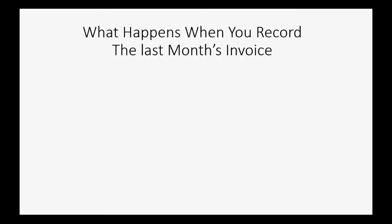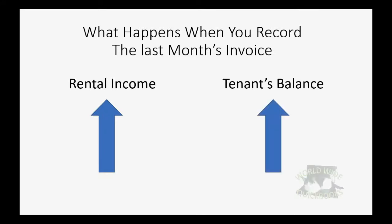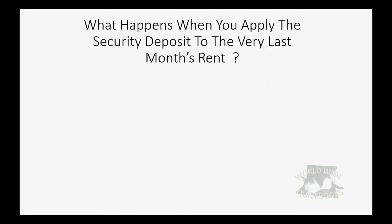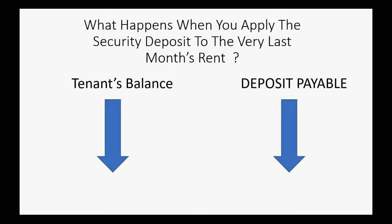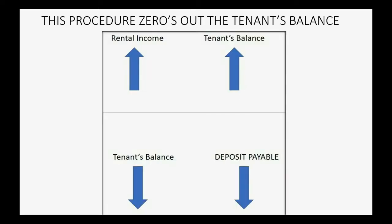When you record the last month's rent invoice, rental income goes up and the tenant's balance goes up. When you then apply the security deposit to the last month's rent, the tenant's balance and the receivable account in the trial balance will go down, and the deposit payable account will go down because deposit payable represents what you owe — and you will owe less because you applied the deposit to the tenant for the last month's rent.